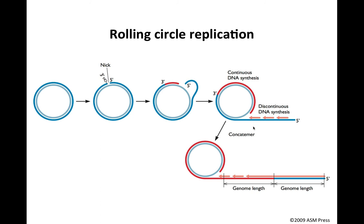There is no end problem because you are just packaging genome-length pieces. You get a concatamer of genomes, then package those into the viral particle. Exact genome lengths are recognized by the packaging machinery and cleaved as they enter the capsid — we'll talk about that in more detail later. The very last copy made will have an end problem from discontinuous synthesis, but it may be one out of hundreds of copies in the concatamer and is simply discarded. So there is no end problem, except perhaps for that last piece.